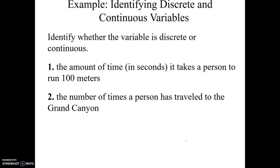Here are some examples. Identify whether the variable is discrete or continuous. The amount of time in seconds it takes a person to run 100 meters. Well, let's think about this. Can we have decimals? Is it possible? Are decimal values possible in this case?